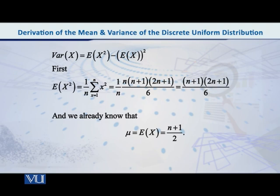So what is that equal to? Obviously that is equal to summation x square into p of x. Now p of x is equal to 1 over n. So let us substitute.